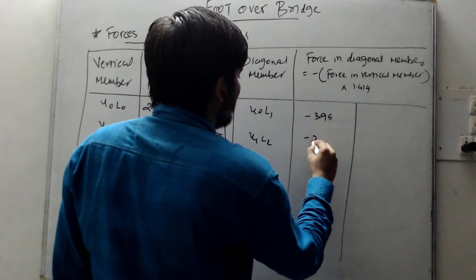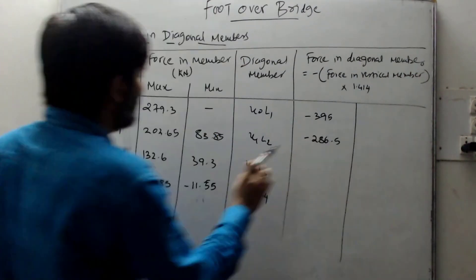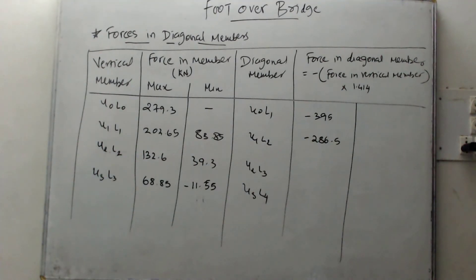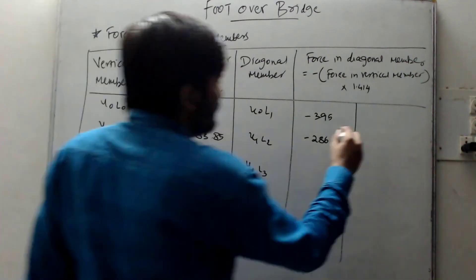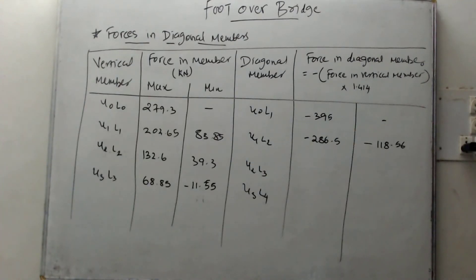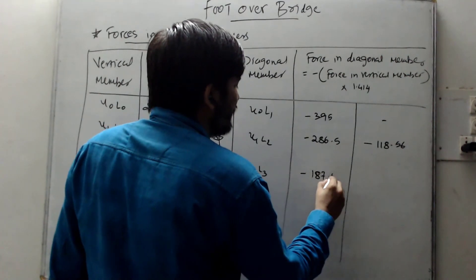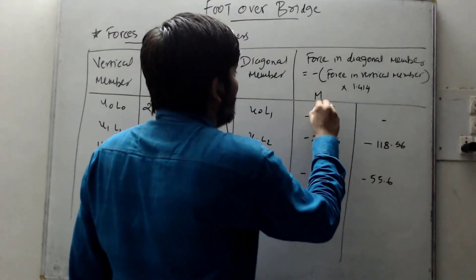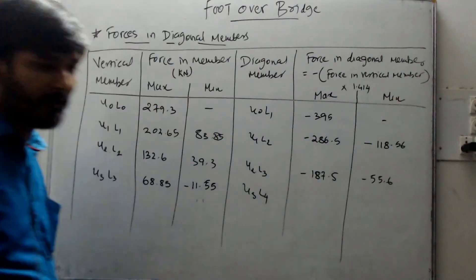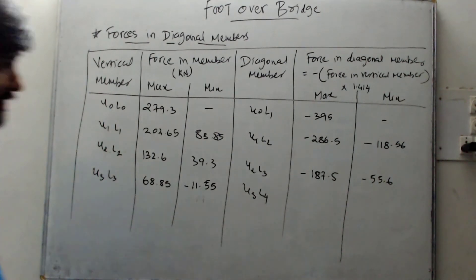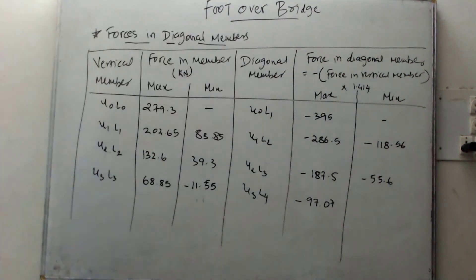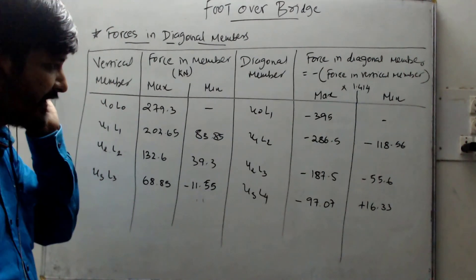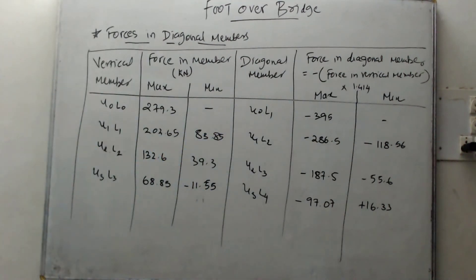Multiplying 202.65 by 1.414 gives 286.5, so maximum is −286.5 kN. Then 83.85 × 1.414 gives −118.56 kN minimum. For U2L3: maximum −187.5 kN and minimum −55.6 kN. For U3L4: maximum −97.07 kN and minimum +16.33 kN — positive because −11.55 × −1.414 gives a positive value.